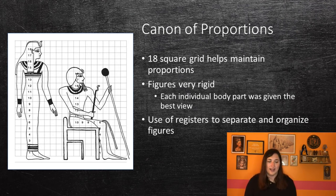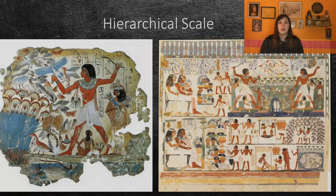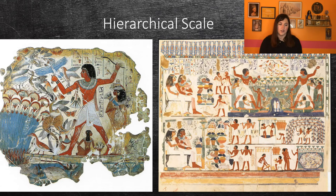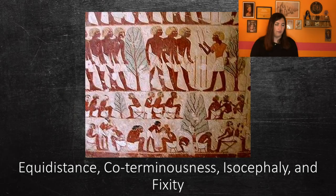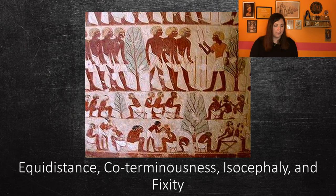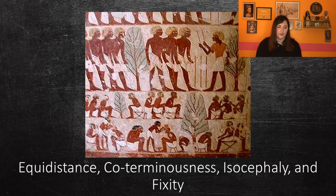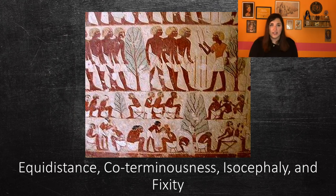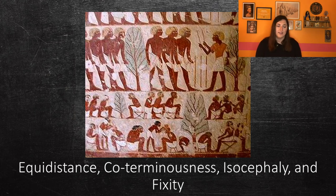The Egyptians also relied on a ground line, which is a line that separated scenes, and registers were the most economical way to construct and organize scenes. Hierarchical scale is the concept that the most important person in the scene is the largest — this would usually be the pharaoh, but in tomb scenes it would be the tomb owner or owners. Family members would usually be next, and then servants and workmen would be the smallest. You can see all four of these concepts in this image. Equidescence means that the figures in each register will be an equal distance from each other, even figures that overlap. Coterminousness means that all figures in each register will be geometrically identical and in a repetitive pattern. Eisocephaly means that heads are always placed at the same height within the register, with the exception of hierarchical scale.